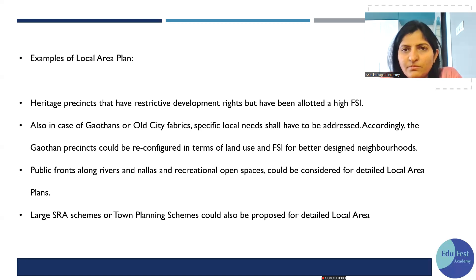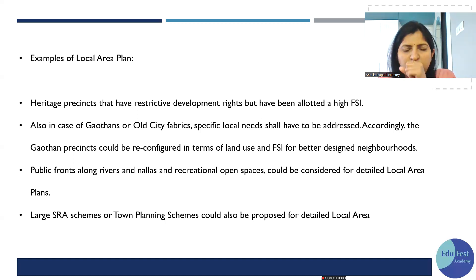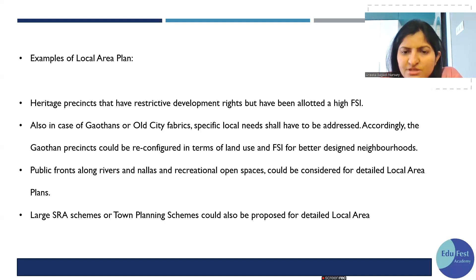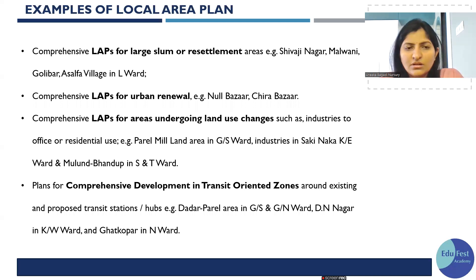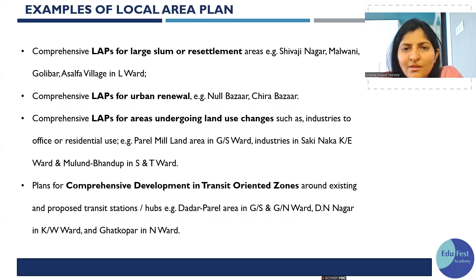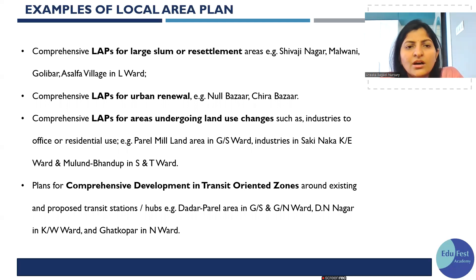For those unique characteristics of gaothan areas, we prepare a Local Area Plan. Next is riverfront development — public fronts along the river, nala, and recreational local spaces can be considered as Local Area Plans. Some large SRA (Slum Rehabilitation Authority) schemes can also be considered as Local Area Plans. Mumbai examples include Shivajinagar, Malvani, and Golibar, which come under Local Area Plans and urban renewal.